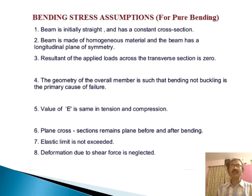The assumptions are: number one, beam is initially straight and has a constant cross section. Number two, beam is made of homogeneous material and the beam has a longitudinal plane of symmetry. Number three, resultant of applied loads across the transverse section is zero.